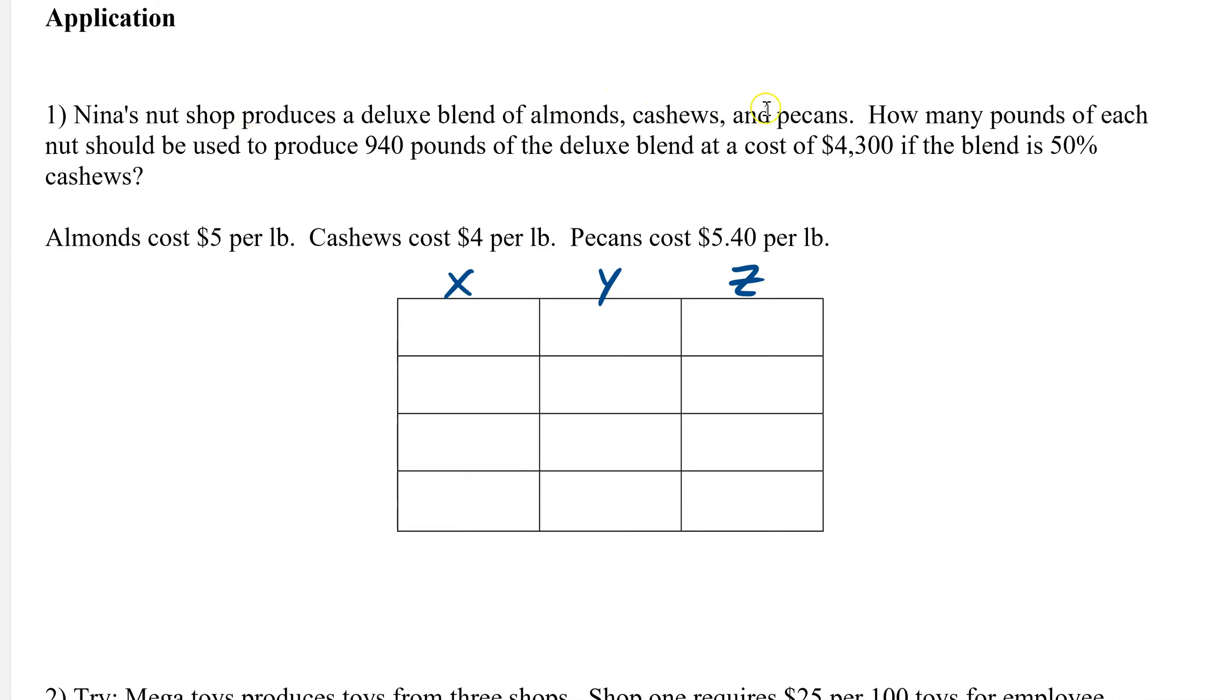Nina's nut shop produces almonds, cashews, and pecans. So those are obviously the three. It says how many pounds of each, so that tells you what it is. X is the number of pounds of almonds. Just like any problem, you want to always define your variable. Y is the number of pounds of cashews. Remember, you want to put units in there. So when we get our X, we know it's pounds.